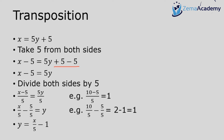That gives y equals x over 5 minus 5 over 5, which simplifies to y equals x over 5 minus 1. I've split the fraction keeping the denominator the same, since 5 divided by 5 is 1. I've included numbers to verify this works — the fraction split is valid and part of the simplification process.